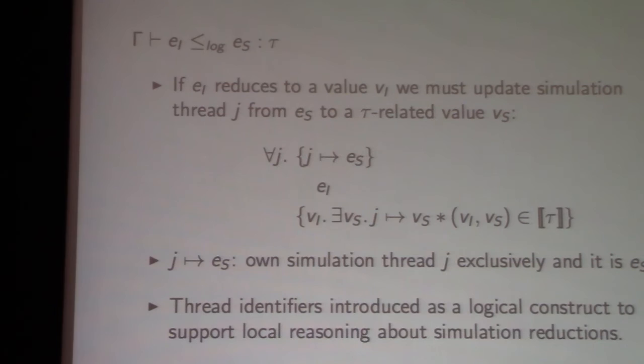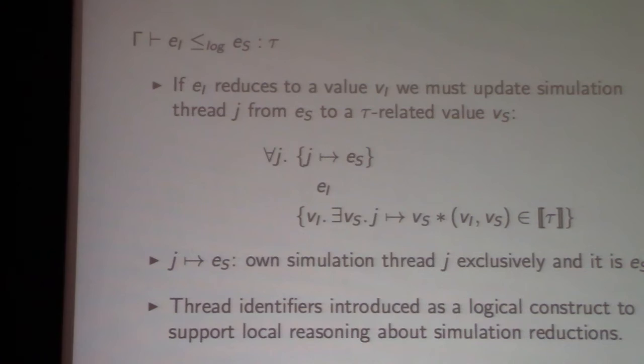I glossed over a few things. One is thread identifiers: the language doesn't actually have thread identifiers — concurrency is expressed in terms of parallel composition with no fork and no thread identifiers — but we still seem to need them logically, to reason locally about expressions appearing in evaluation contexts. I'll do a small example that illustrates that better in a few slides.